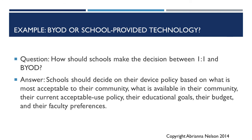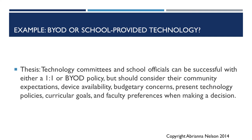I took my thoughts and response and posed another question: how should schools make the decision between a one-to-one and a BYOD policy? My answer was that schools should decide on their own device policy based on what is most acceptable to their community, what is available in their community, their current acceptable use policy, their educational goals, their budget, and their faculty preferences. Based on my research all of those points seem very important. So now that I have my emotional response, my question, and my answer, I can write a thesis. My thesis ended up being: technology committees and school officials can be successful with either a one-to-one or BYOD policy, but should consider their community expectations, device availability, budgetary concerns, present technology policies, curricular goals, and faculty preferences when making a decision.